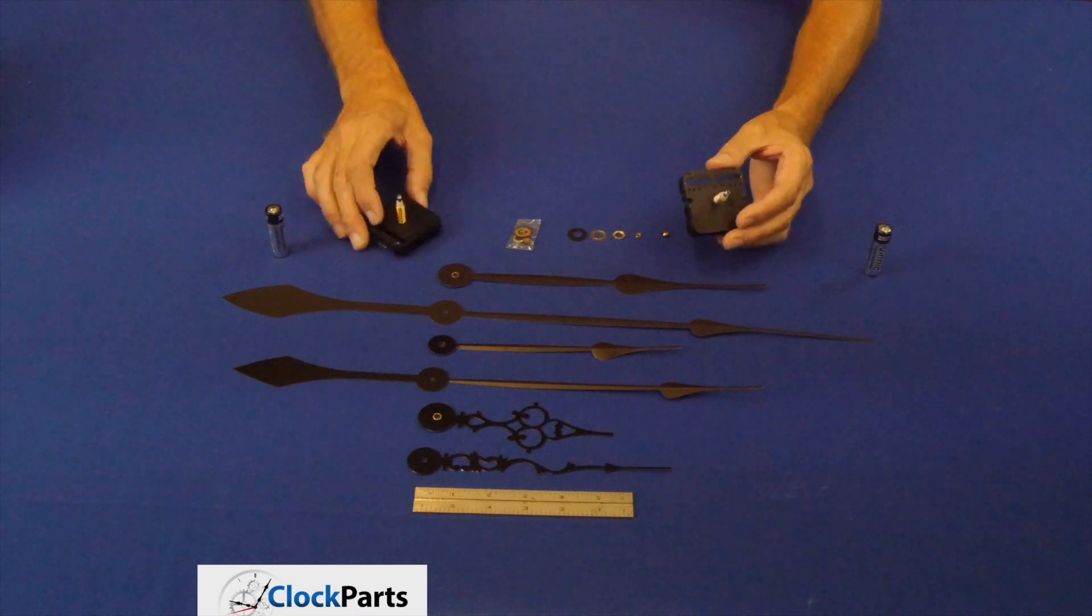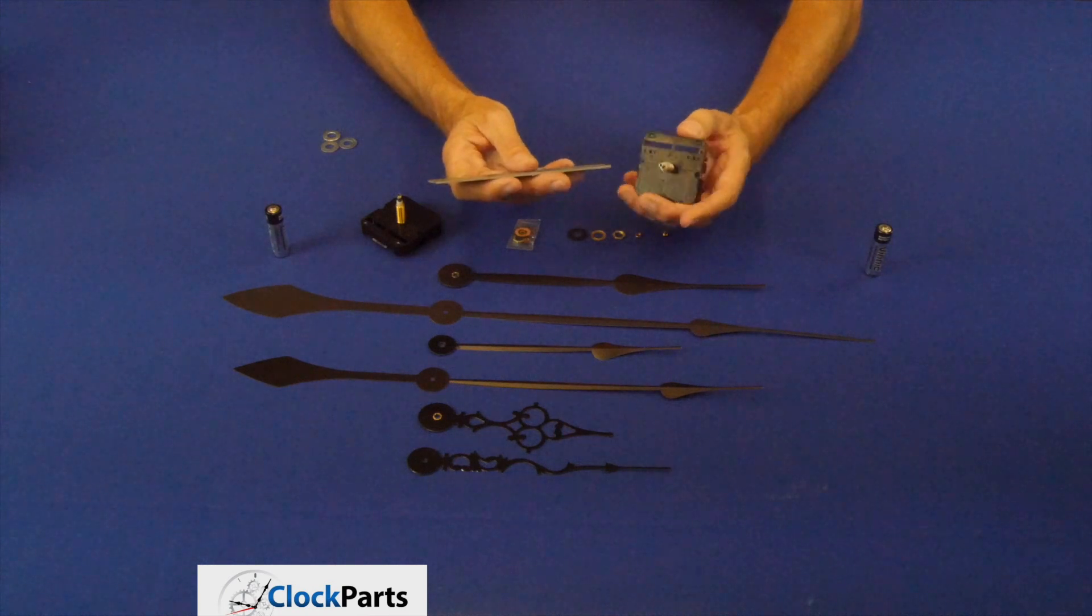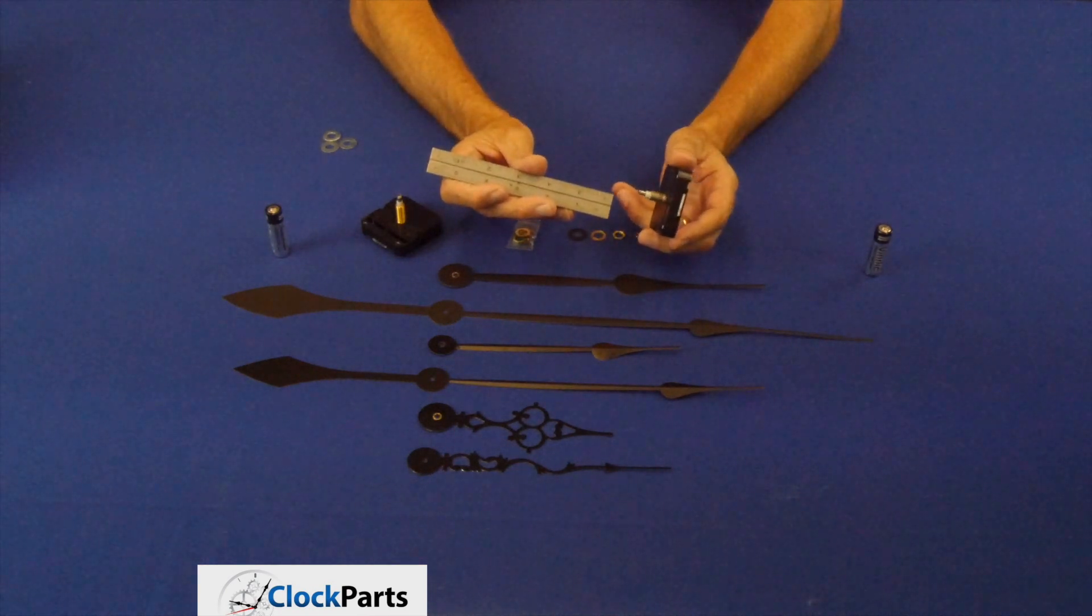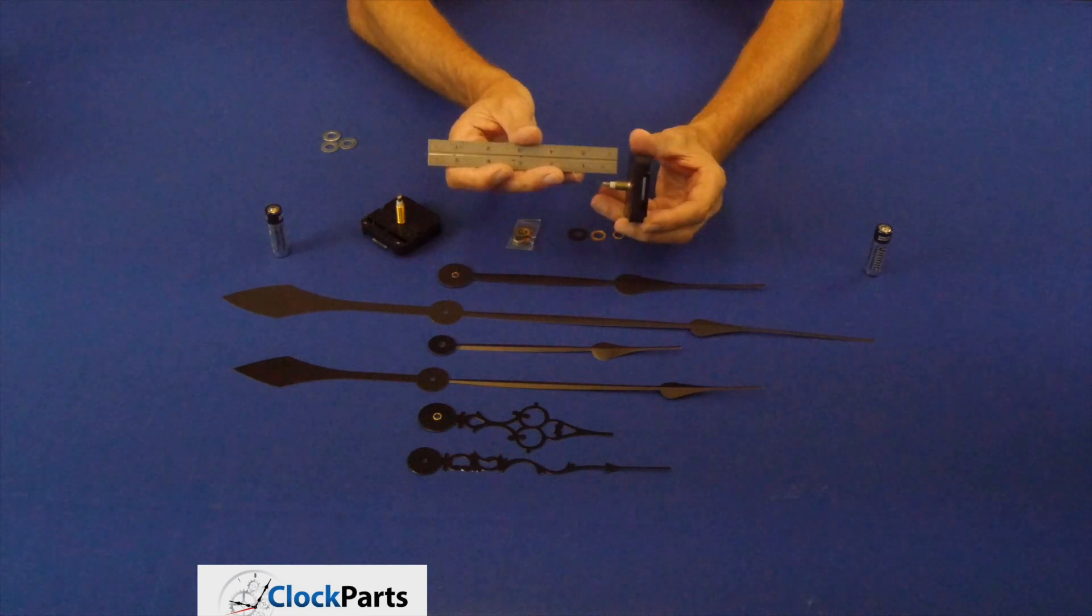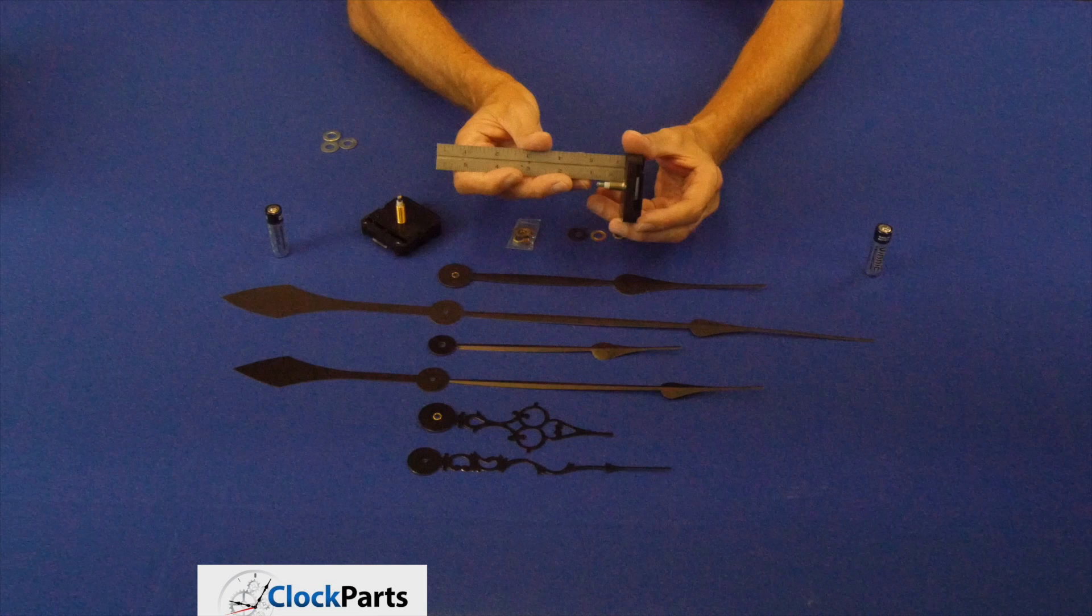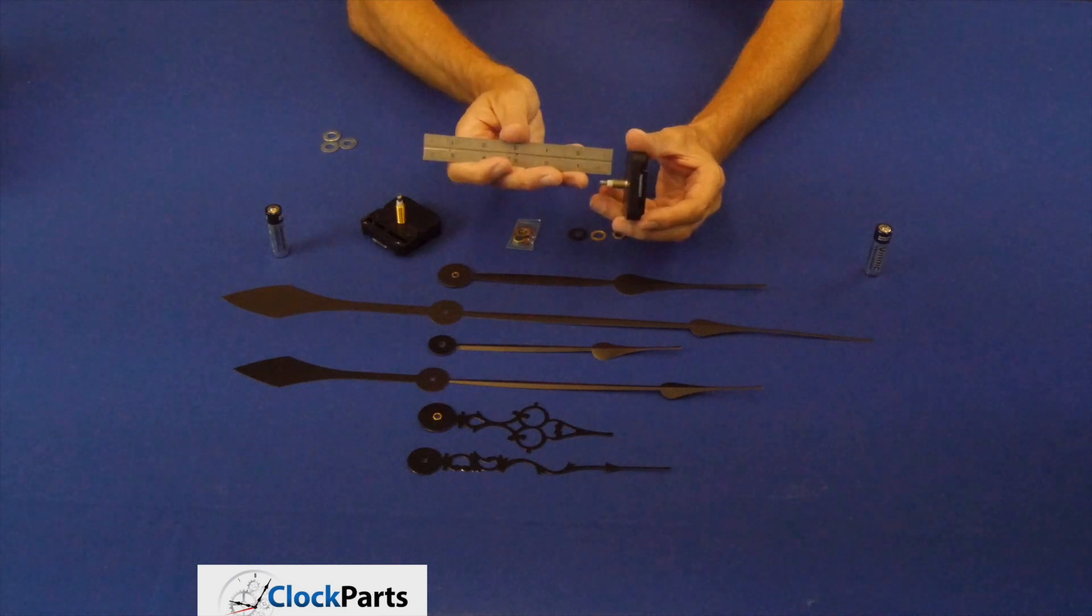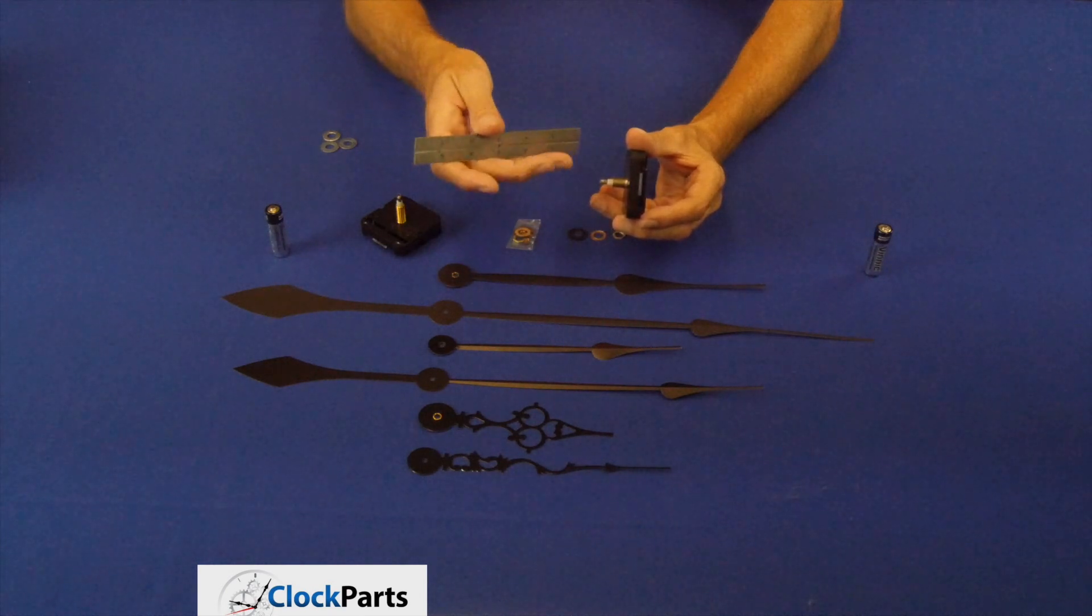I'll show you how to measure this. We're going to measure from the base of the movement. So if you took out your old movement, you have to remove it to replace it. So measure from the base and you're going to get the overall length. The overall length is only important if you have a lens, so your hands do not hit the lens.